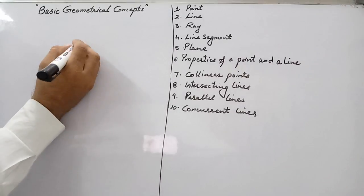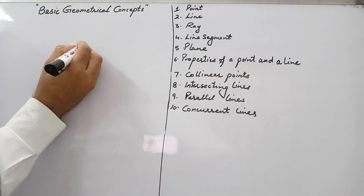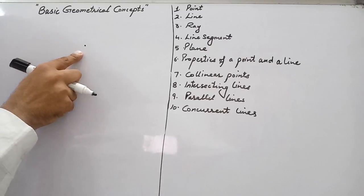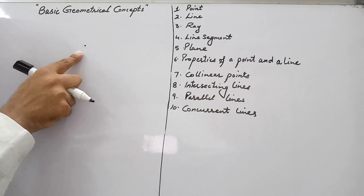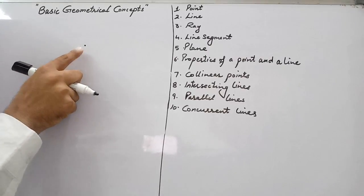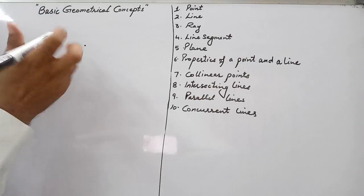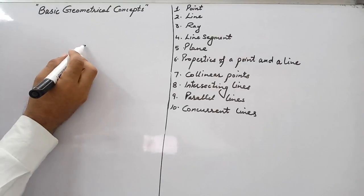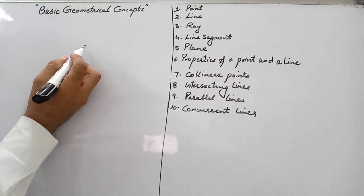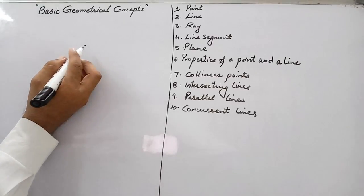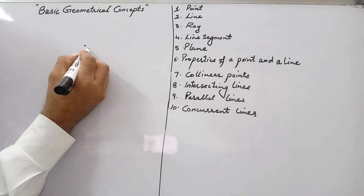First is a point. A point has an exact location. It has no length, no breadth, no height. We write its name as point A.